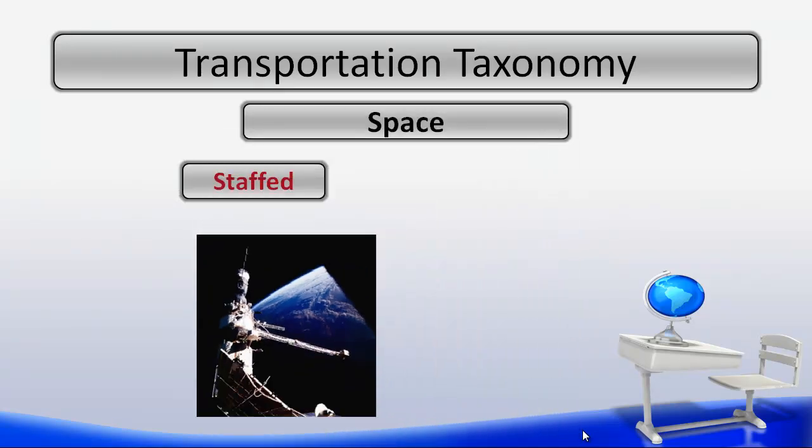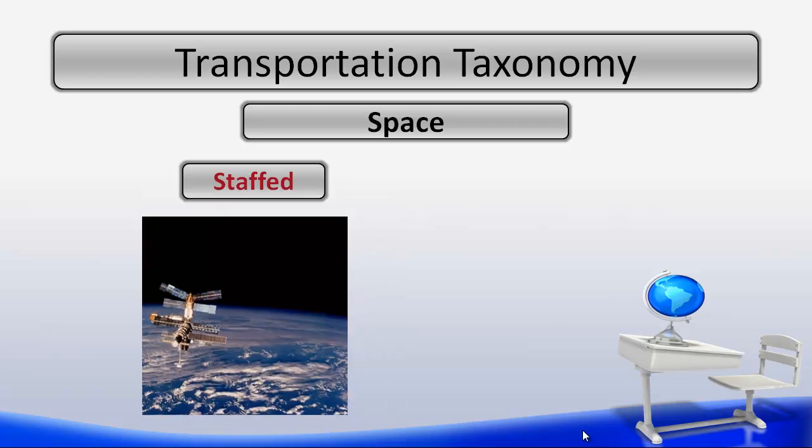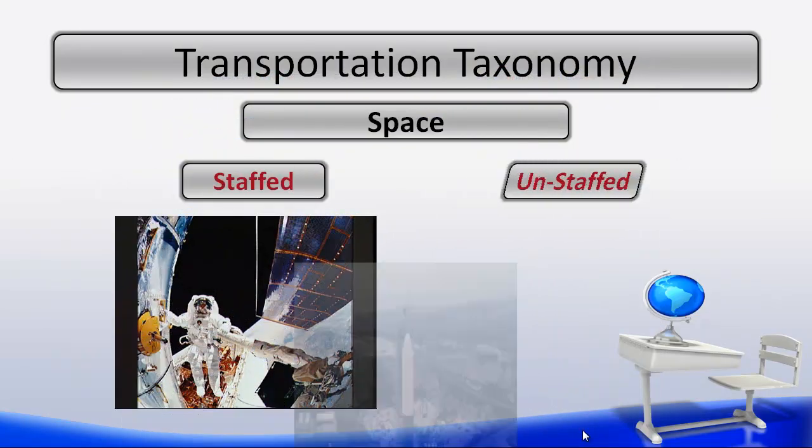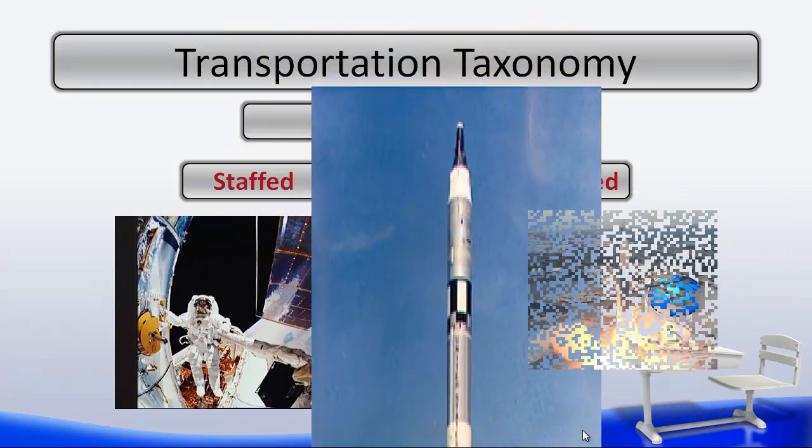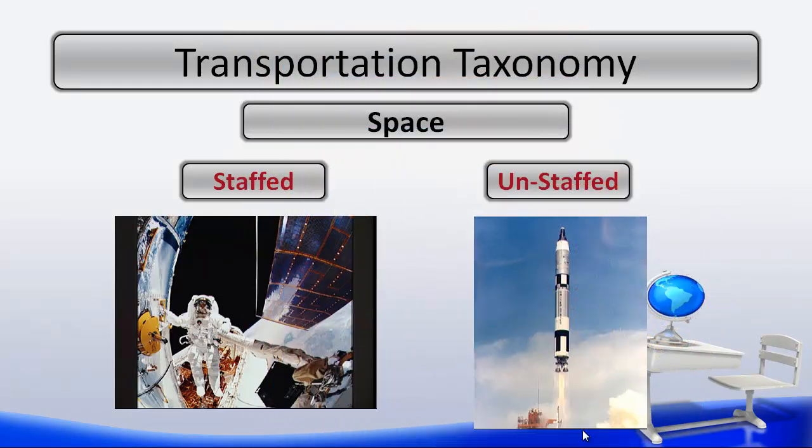Examples of space transportation based on the staffed subsystem would include the space shuttle and the space station. Some examples of unstaffed transportation would include rockets, missiles, and satellites.